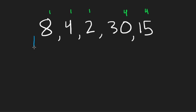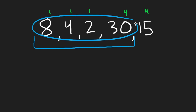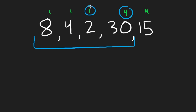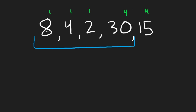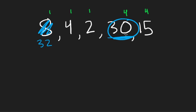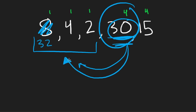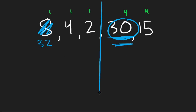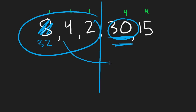But when we encounter an element with a different bit count, we hit a split point. Elements on either side of a split can never cross it because the bit count differs and swaps aren't allowed across different counts. For example, if the next element is 30 and it's bigger than something in the first block but belongs to a new group, we must treat it as a separate subarray.